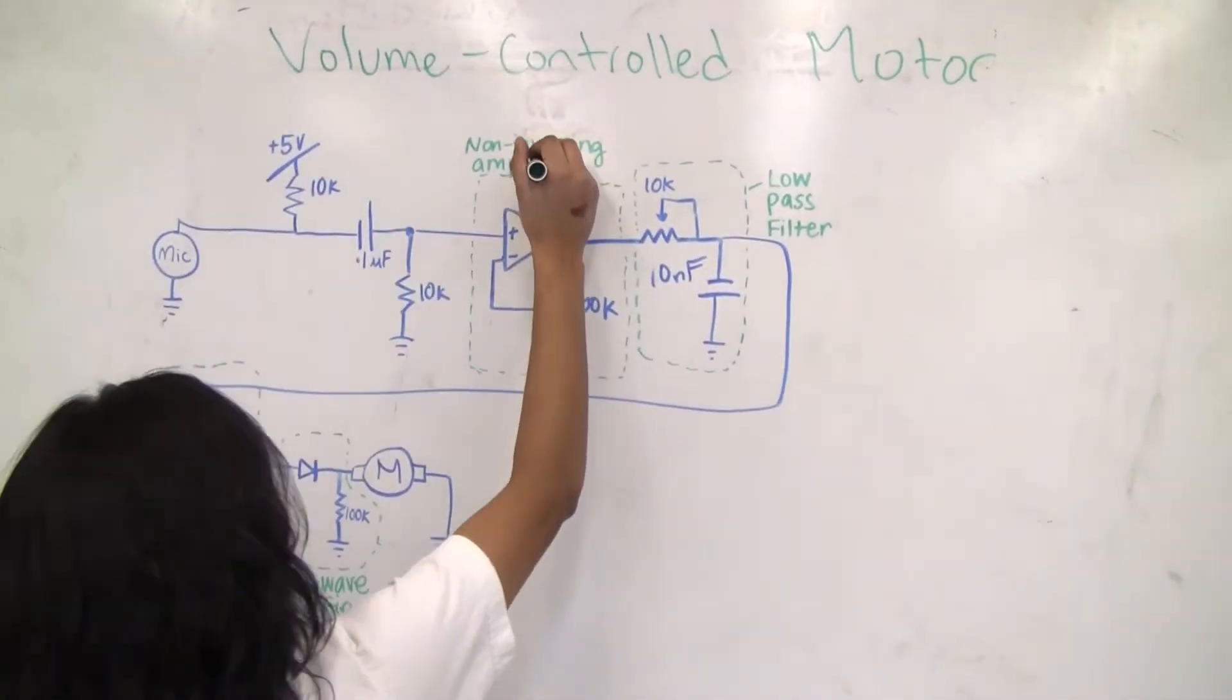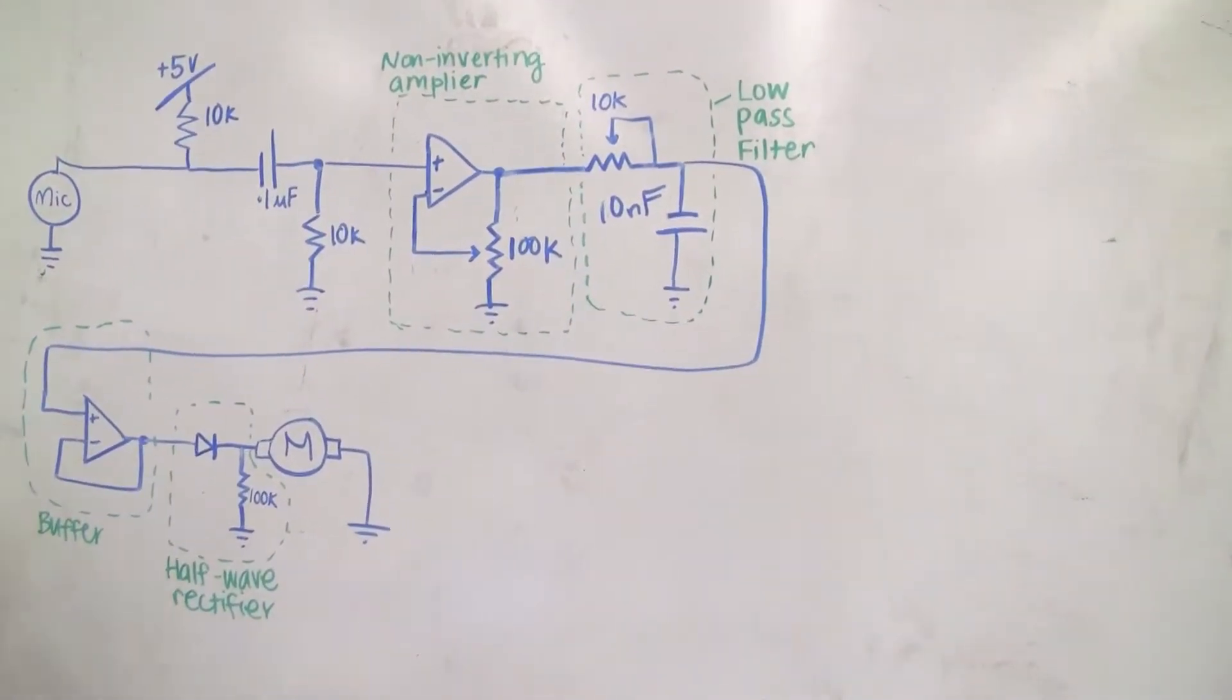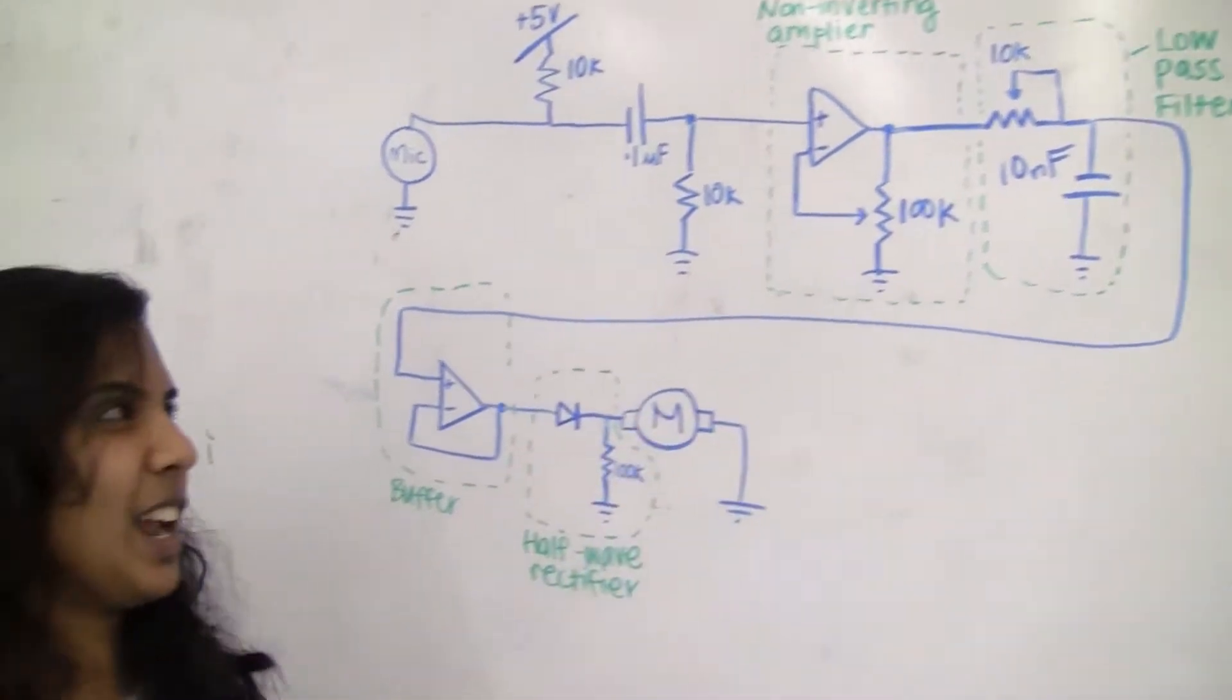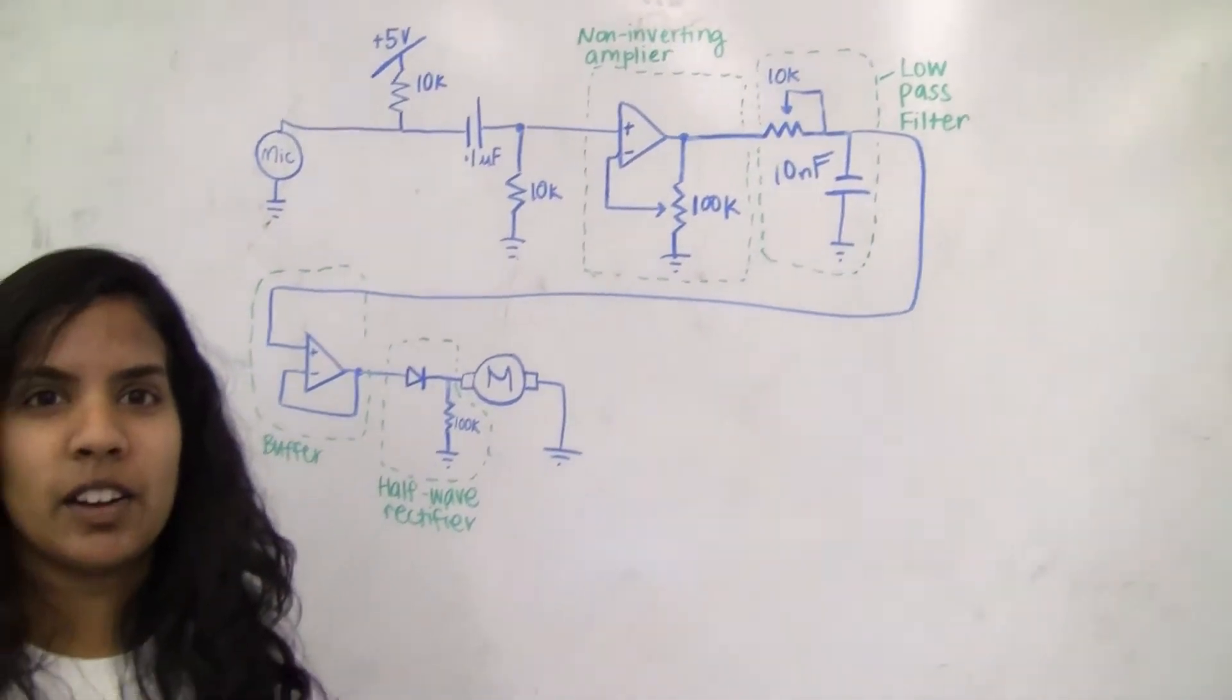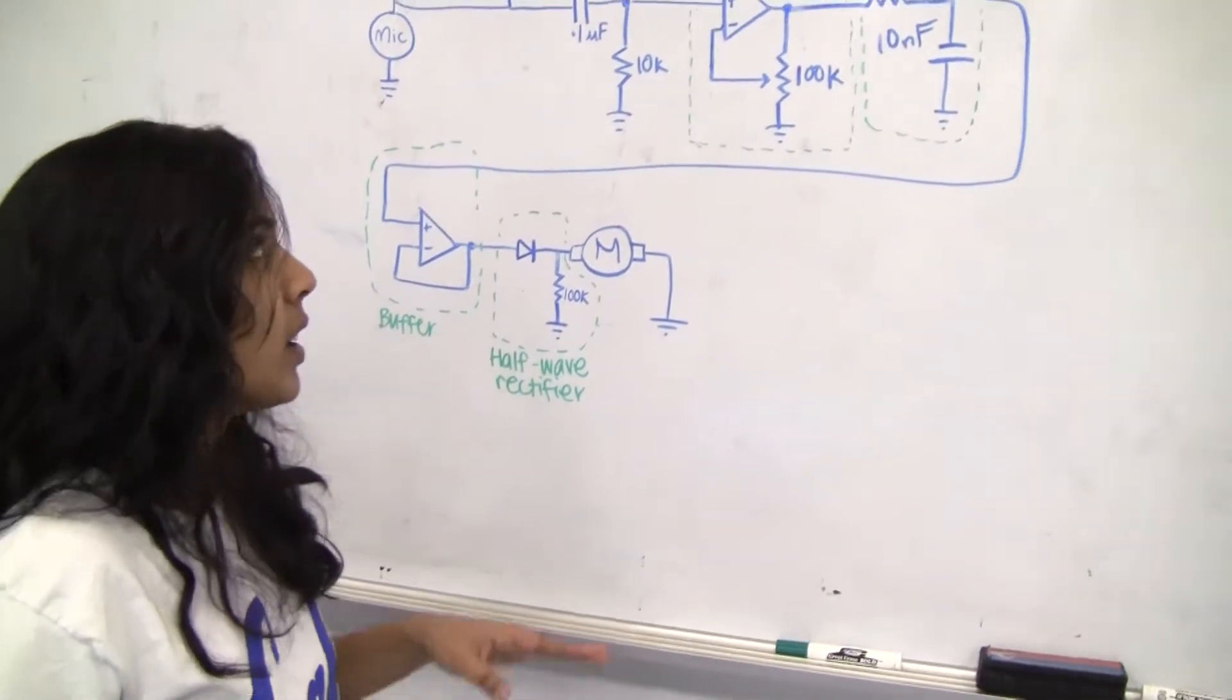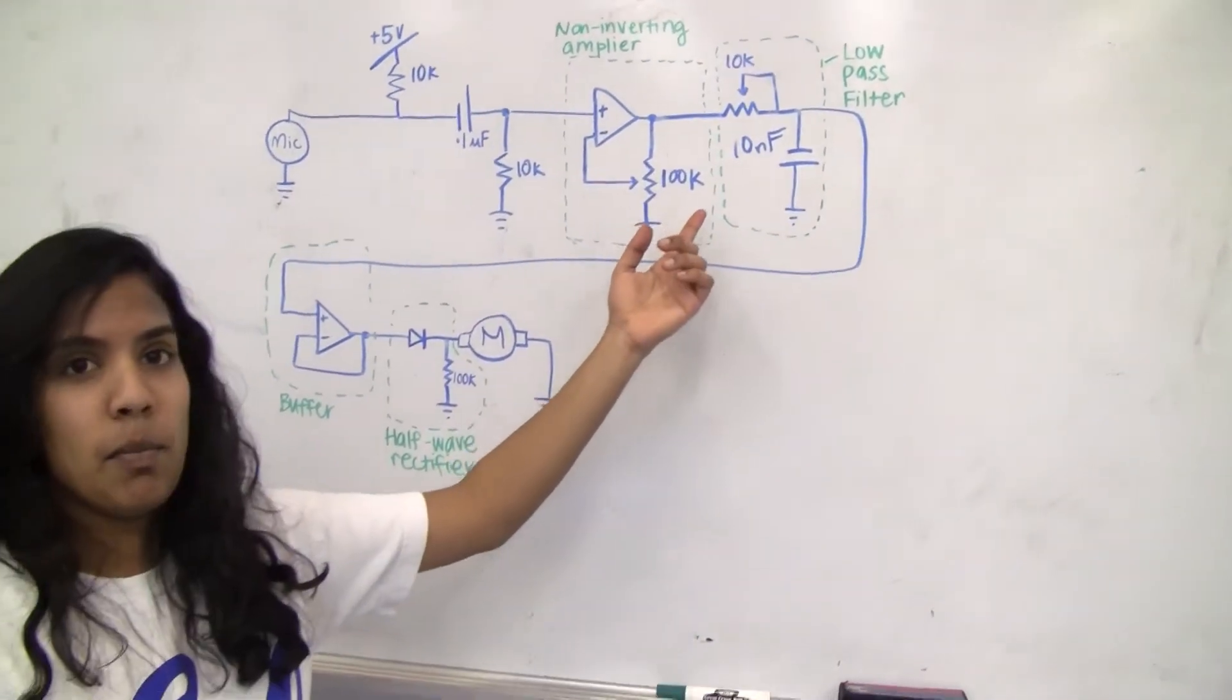We have the signal from the microphone going into a non-inverting amplifier so that we could amplify the signal that we got out of the microphone to something usable for the motor. For that we used a hundred K pot.